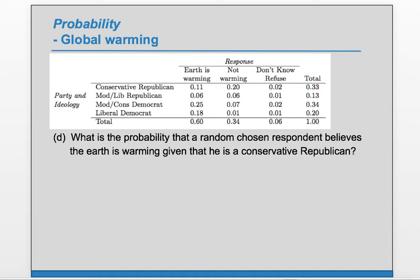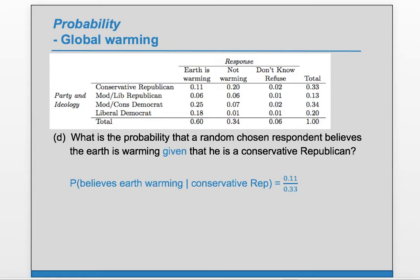Part D: what is the probability that a randomly chosen respondent believes the Earth is warming, given that he is a Conservative Republican? We have this conditional probability — Earth warming given Conservative Republican. Given we're in that group, the probability is 0.11 divided by 0.33, which is about 33%.